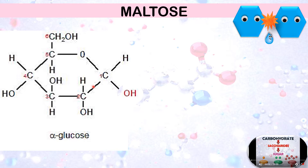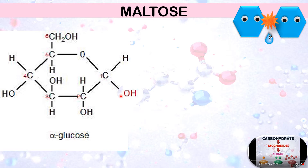A glucose molecule is hexagonal in structure. Remember the arrangement of the carbons: carbon one is the rightmost, then following a clockwise manner you have carbon two, carbon three, carbon four, carbon five, and carbon six is positioned above carbon five. Do not make the error of putting carbon six as the sixth corner of the hexagon — that corner is for the oxygen atom shared by carbon one and carbon five. For an alpha glucose molecule, the hydroxyl group at carbon one is positioned below while the hydrogen is positioned above.